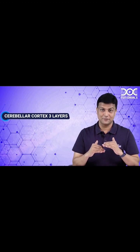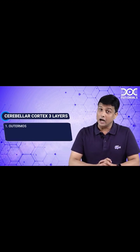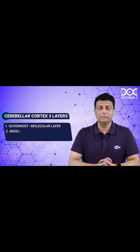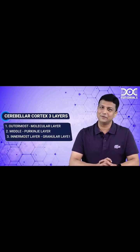The cerebellar cortex is divided into three layers. The outermost layer is the molecular layer, the middle layer is the Purkinje layer, and the innermost layer is the granular layer.